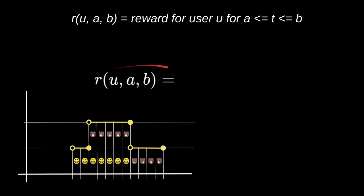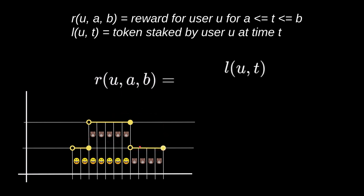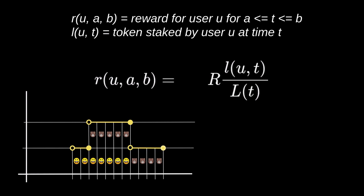So how do we calculate R_UAB — the reward a user receives between time A and B? First, we look at the graph to determine l(U, T), the amount of tokens staked by a user at time T. Then we divide that by L(T), the total tokens staked in the contract, and multiply by R. We evaluate this for each second from T equals A to T equals B and then add everything up. This is the formula to calculate how much reward a user will receive for staking from T equals A to T equals B.